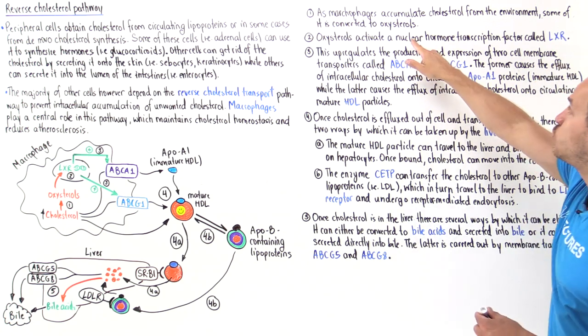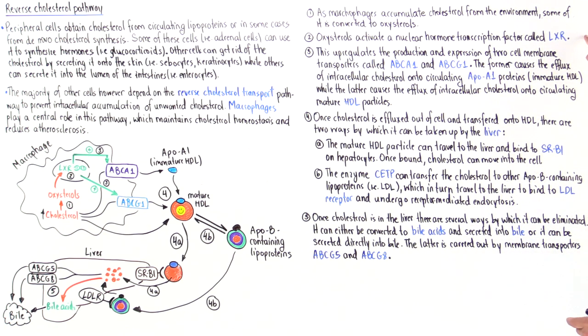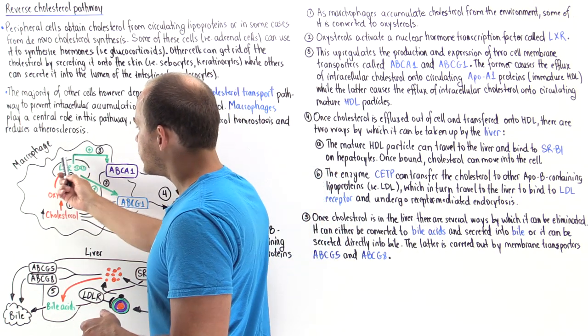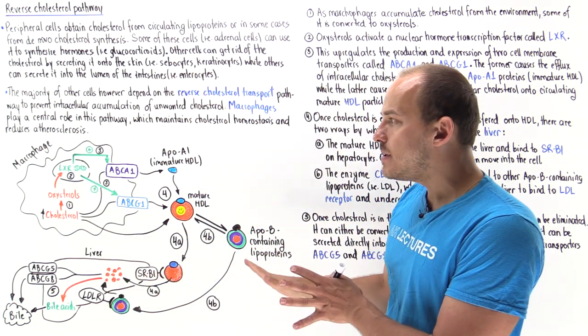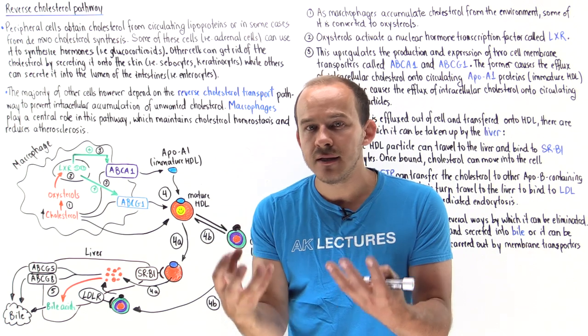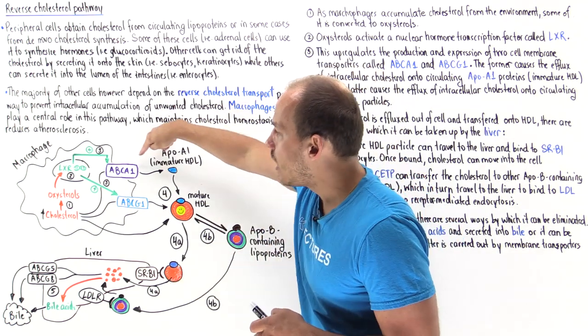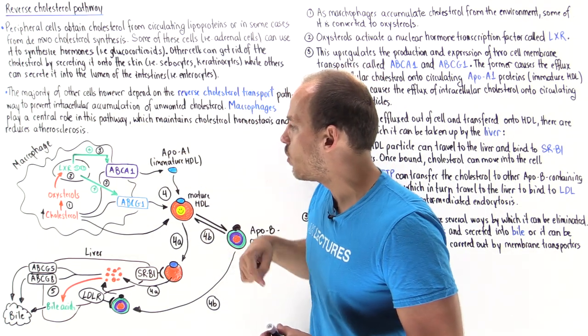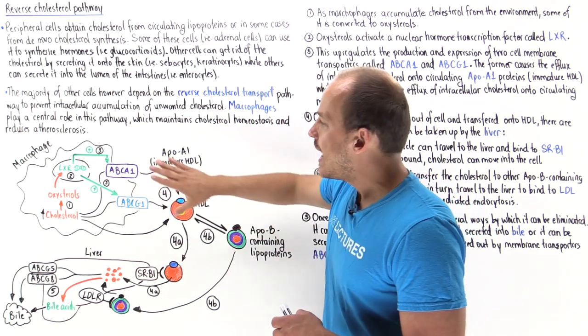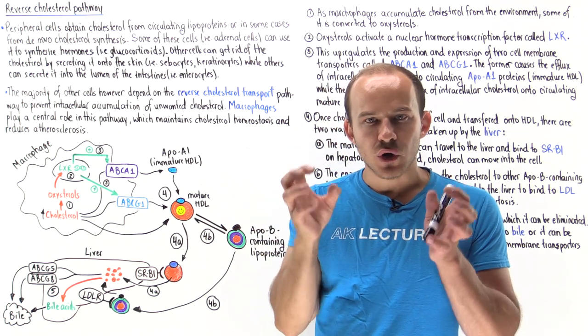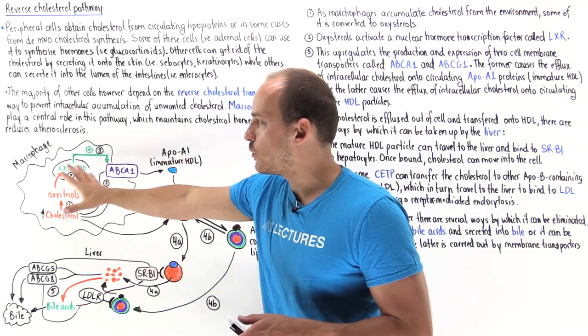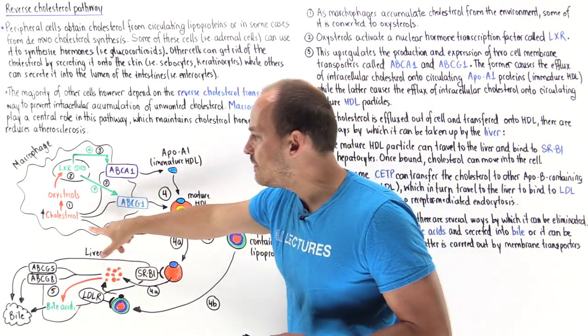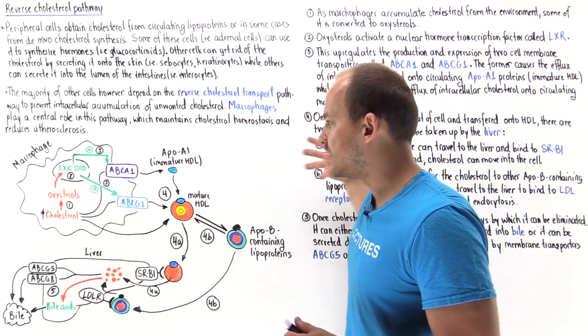As the levels of oxysterols increases, that activates an important nuclear hormone transcription factor known as LXR. LXR moves into the nucleus of that macrophage and it stimulates the expression and the building of these ATP binding cassette proteins known as ABCA1 and ABCG1. These are surface transporters present in the surface membrane of the macrophage, and what they do is they allow the movement, the efflux of cholesterol out of the cell.